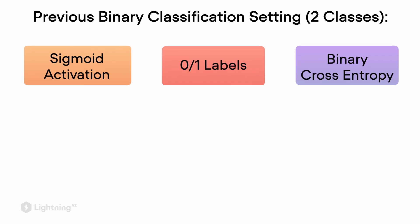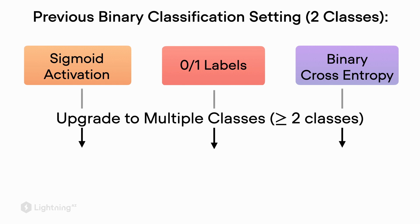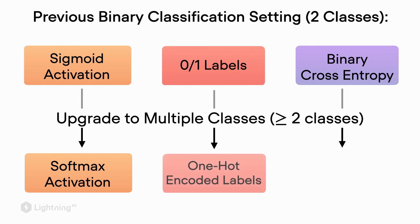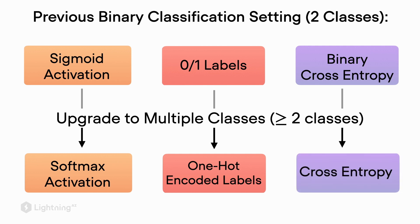Now we are going to upgrade our logistic regression model so that it can deal with more than two classes. For that, we are swapping out the sigmoid activation function with a so-called softmax activation function. Instead of having 0 and 1 class labels, we deal with problems where we have more than two classes — for example, 0, 1, 2, 3, 4, and 5. We are also going to learn about one-hot encoding to encode our labels, and how to upgrade the binary cross entropy function into the multi-class cross entropy function.